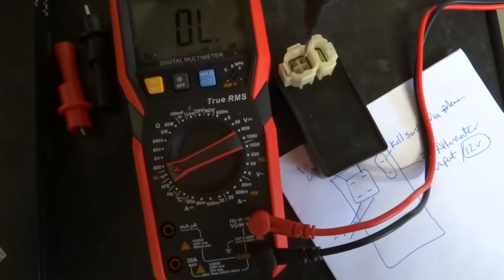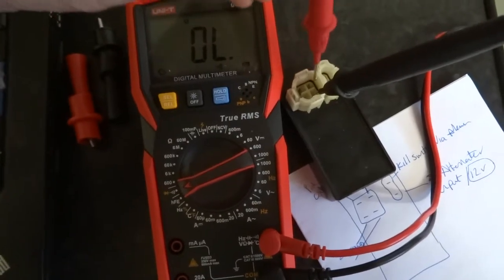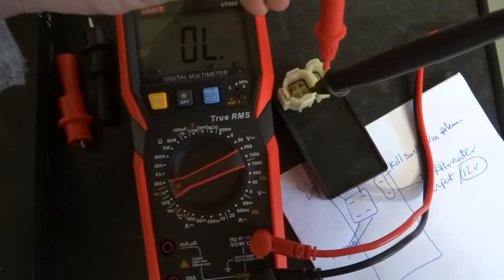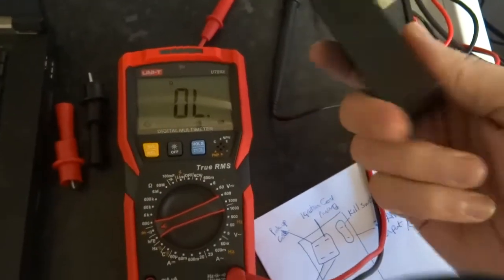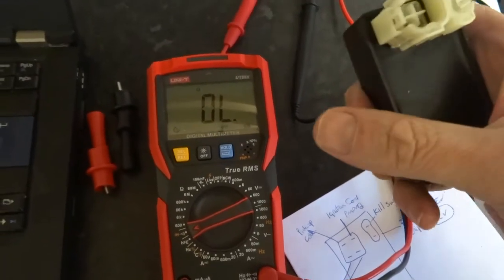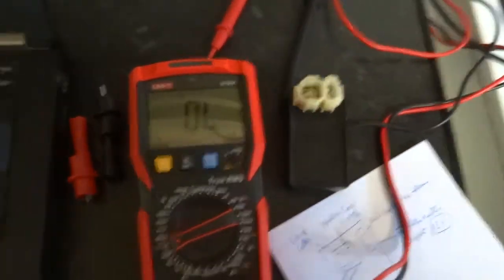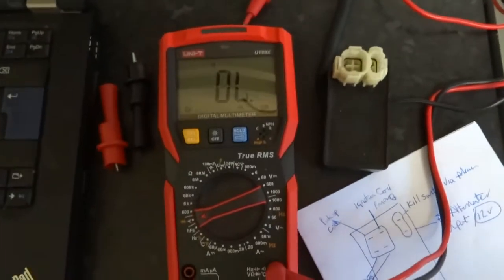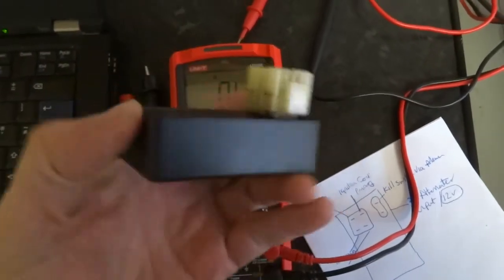So let's swap over to the next ground. So that looks like a good CDI. Obviously it could be shorted in the open position though. But mainly they do short, but they could fail open. So that test well as well.